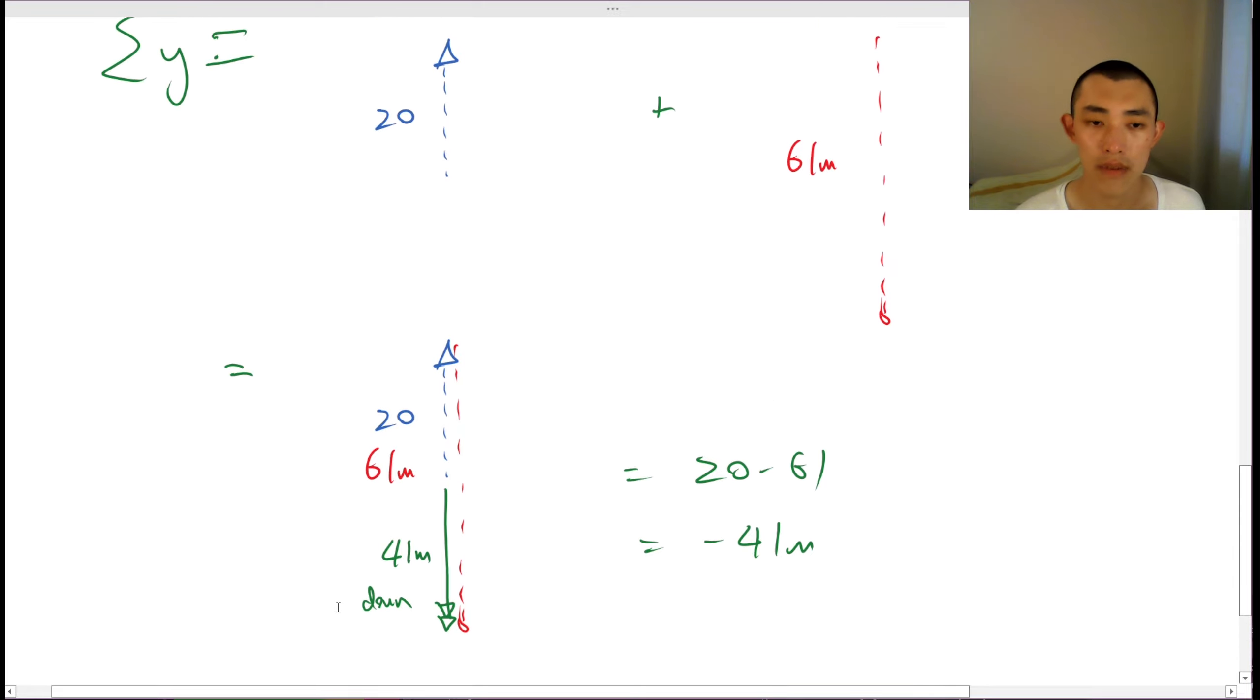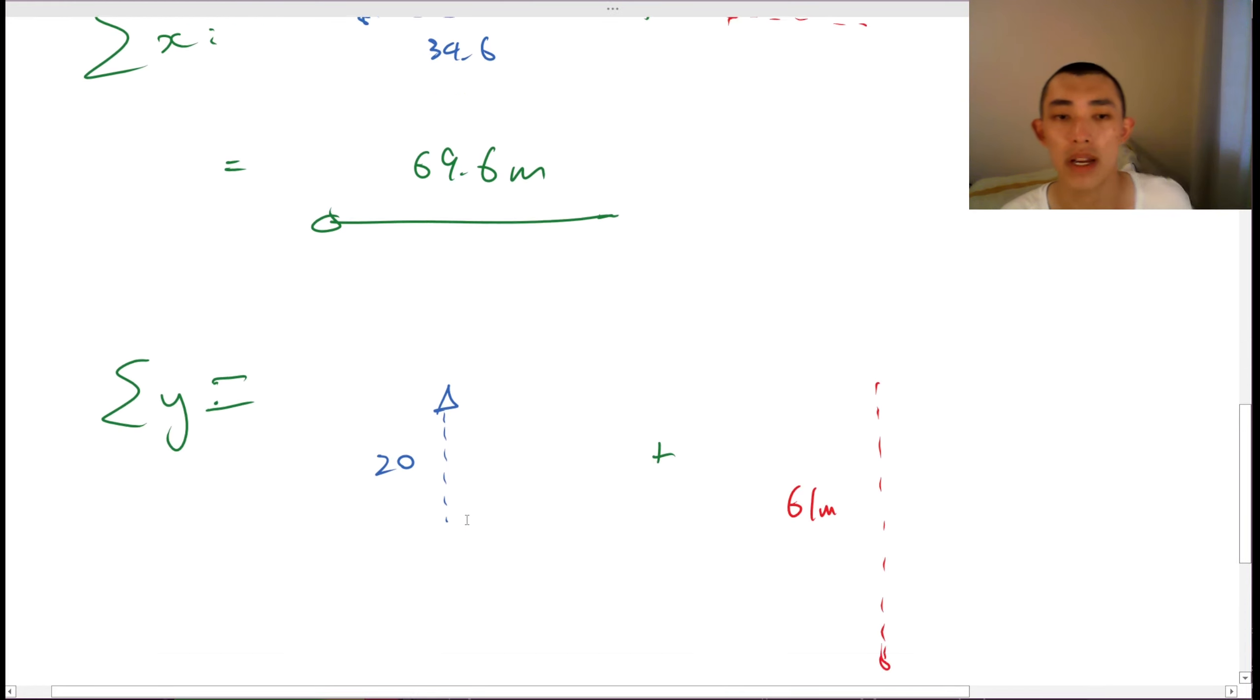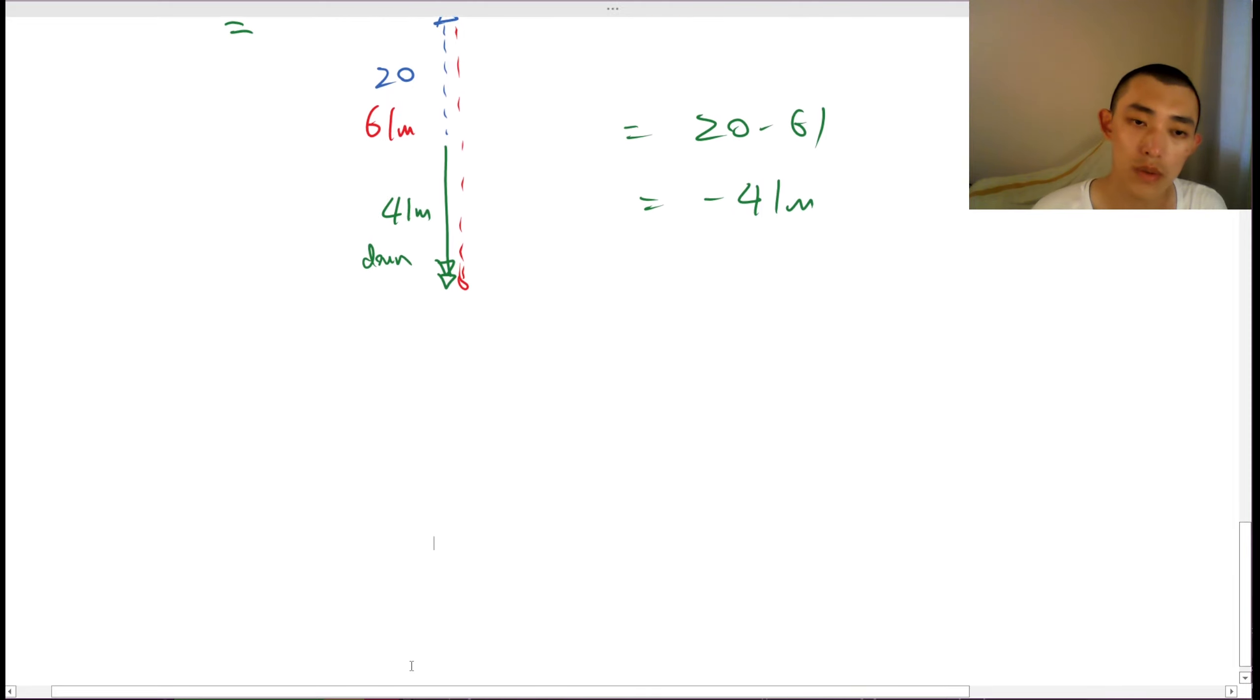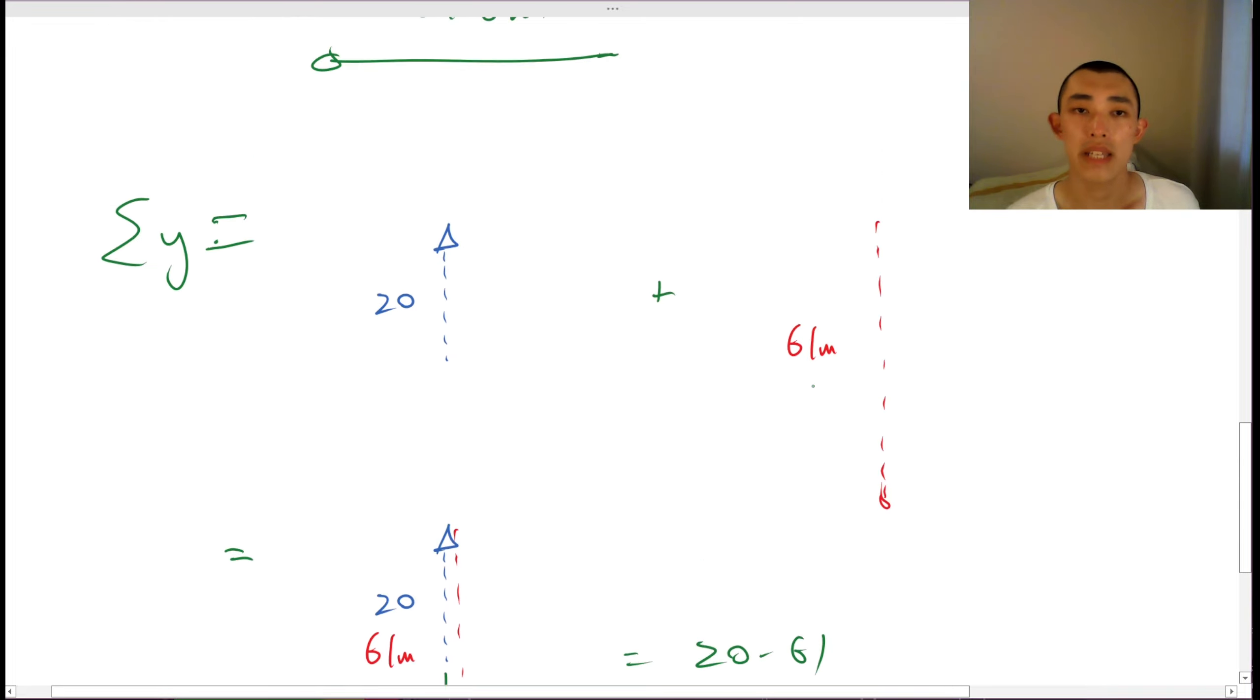Now that we know that of the final vector, it's 41 meters downwards and it's 69 meters towards the right, we can now begin to do step three, which is the add the x and y components, x plus y components.